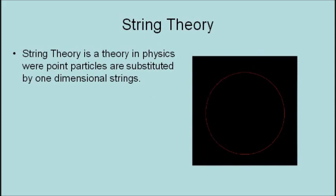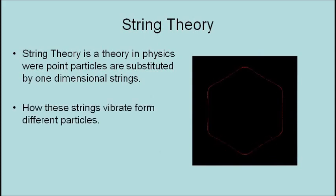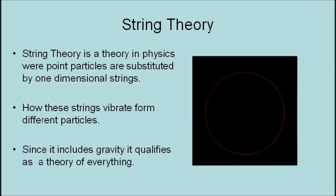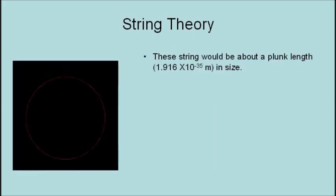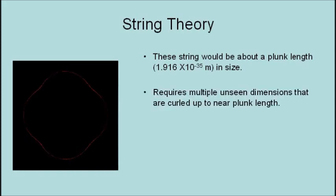String theory is a theory in physics where point particles are substituted by one-dimensional strings. How these strings vibrate form different particles. Since it includes gravity, it qualifies as a theory of everything. These strings are about a Planck length, or 1.916 times 10 to the negative 35 meters, in size. It requires multiple unseen dimensions that are curled up to near Planck length.